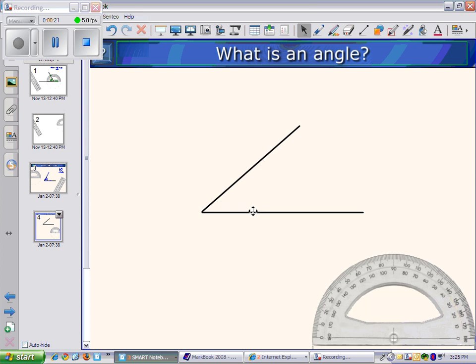An angle is made of one arm and another arm. Where the endpoints meet is the vertex.